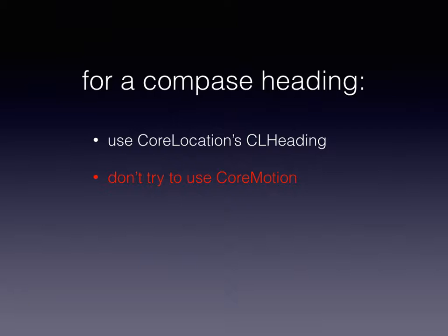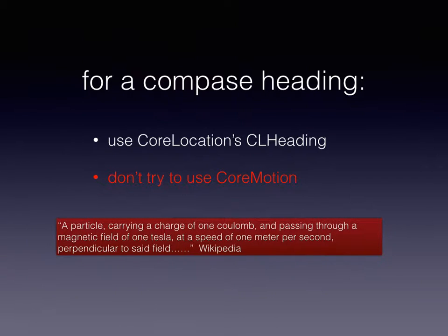One thing I did not discuss in the videos on core motion was the magnetometer. If you want to get compass headings, use core location — don't use core motion. The reason is that there's a lot of ambient magnetic noise; there's all kinds of magnetic fields above and beyond the Earth. What the magnetometer does is it measures micro teslas in all three planes. To get a compass out of that, you need a fair amount of mathematical filtering.